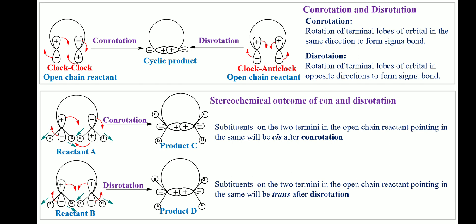Conrotation and disrotation are two terms frequently used in electrocyclic reactions. These two rotations govern the stereochemical outcome of an electrocyclic reaction, so a proper understanding of these two terms is essential. In conrotation, the terminal lobes of the highest occupied molecular orbital of the open-chain reactant rotate in the same direction — one clockwise and the other anti-clockwise — to form the product.